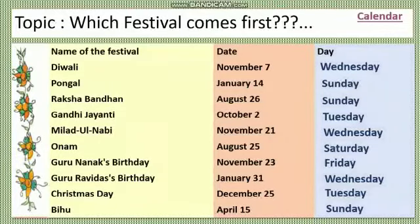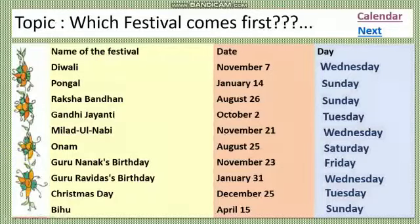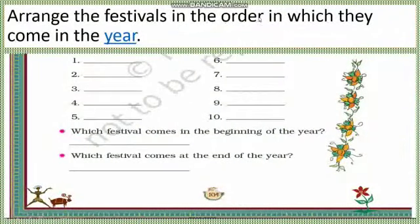Understood, students? In the textbook you have to look at the given dates on the calendar and find which day that date falls on, and write the answer. The answers have already been provided and explained. Now let's see the next part: arrange the festivals in the order in which they come in the year.